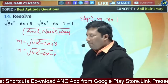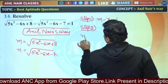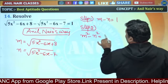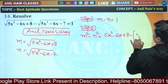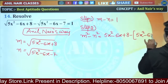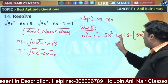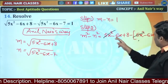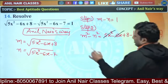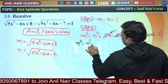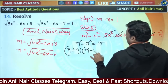Step number 2: If I compute m² minus n², the square roots go away. m² = 5x²-6x+8 and n² = 5x²-6x-7. So m² - n² = (5x²-5x²) + (-6x+6x) + (8-(-7)) = 15. Therefore m² - n² = 15, which means (m+n)(m-n) = 15. Since m-n = 1, we get m+n = 15.